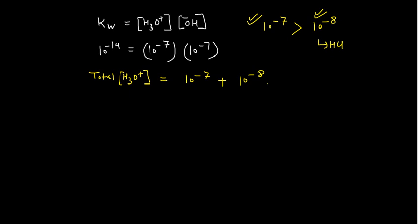If you add both of them together, you can take 10 to the power minus 7 as common, and within the bracket you are left with 1 plus 0.1. This is the little mathematics you should know. If you are studying BSc and do not have mathematics after 10th, this little mathematics can be tricky, so always practice basic mathematics at least up to class 10th to get calculations correct. Solving this gives you 1.1 × 10 to the power minus 7 hydronium ion concentration.